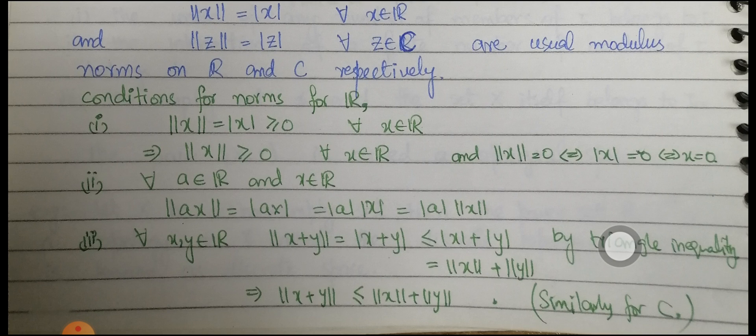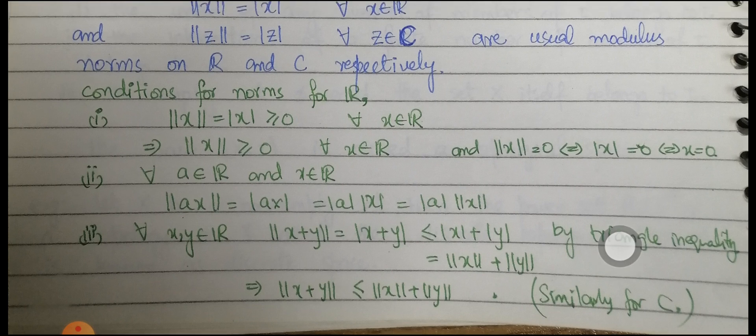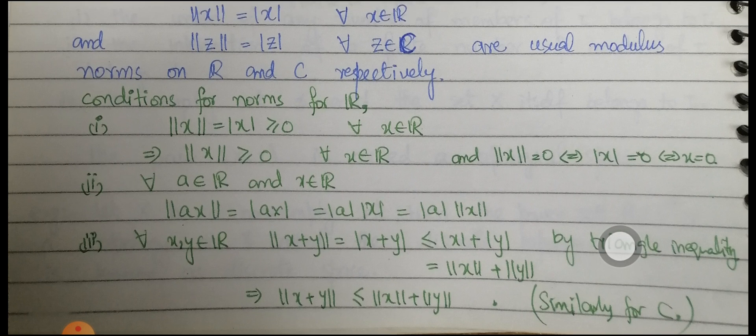For the second condition, for any a ∈ ℝ and x ∈ ℝ, ‖ax‖ = |ax| = |a|·|x| = |a|·‖x‖, so condition 2 holds. For the third condition, ‖x + y‖ = |x + y| ≤ |x| + |y| = ‖x‖ + ‖y‖ by the triangle inequality for modulus. Hence the usual modulus is a norm on ℝ over the field ℝ.